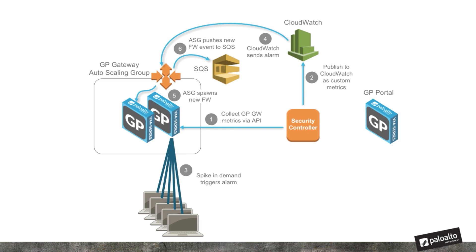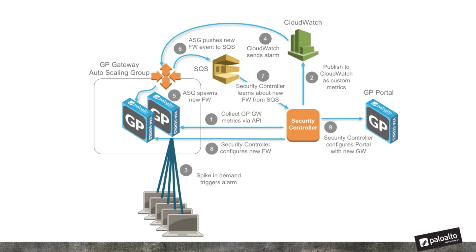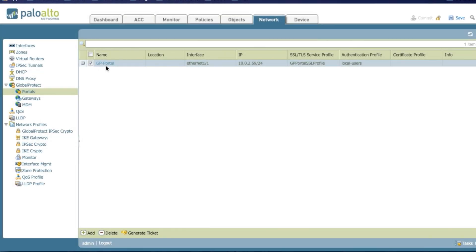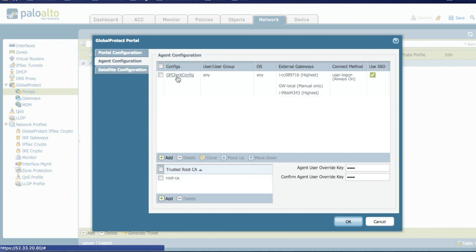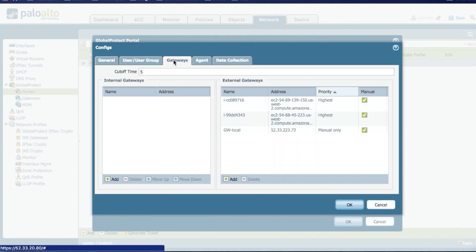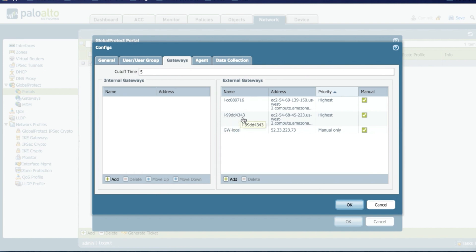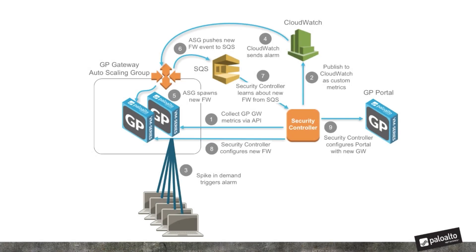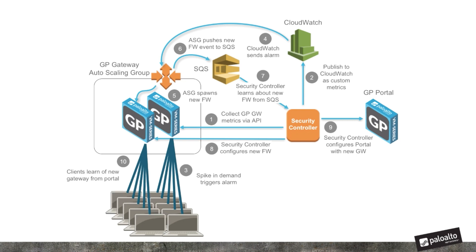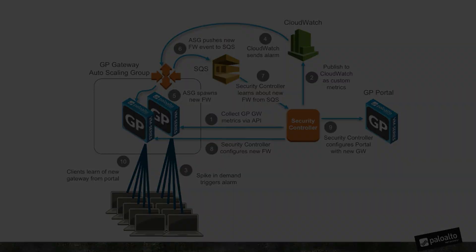The ASG has pushed an event to the SQS — the Simple Queuing Service. The security controller is monitoring that event, now knows there's a new firewall, and is going to configure it. It's also going to register that new firewall as a GP gateway in the GP portal. Returning to the Global Protect portal and looking at the client config, we now see a new gateway with the ID ending in 343 — it has already been registered to the portal automatically. When new clients get the latest list of gateways from the portal, they're aware of the new gateway and automatically start connecting to it, using the increased capacity.